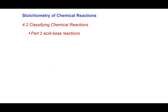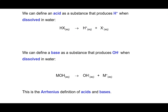The second important class of chemical reactions in Chapter 2 is acid-base reactions. We need to define what we mean by an acid and a base before we look at how they react with each other. An acid is defined as a substance that produces hydrogen ions when dissolved in water. Acids are covalent compounds when used to form aqueous solutions.